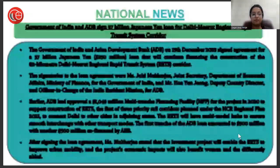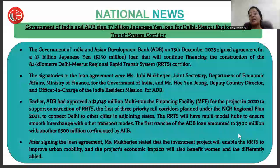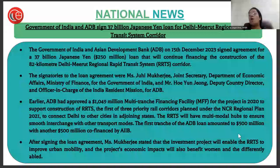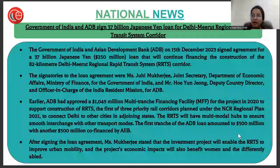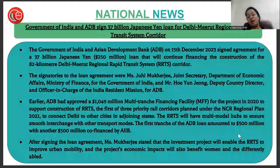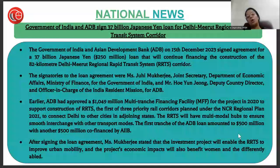The Government of India and ADB — the Asian Development Bank — signed a 37 billion Japanese yen loan for the Delhi-Meerut Regional Rapid Transit System corridor. After signing the loan agreement, Ms. Mukherjee stated that the investment project will enable the RRTS to improve urban mobility, and the project's economic impact will also benefit women and differently-abled persons.